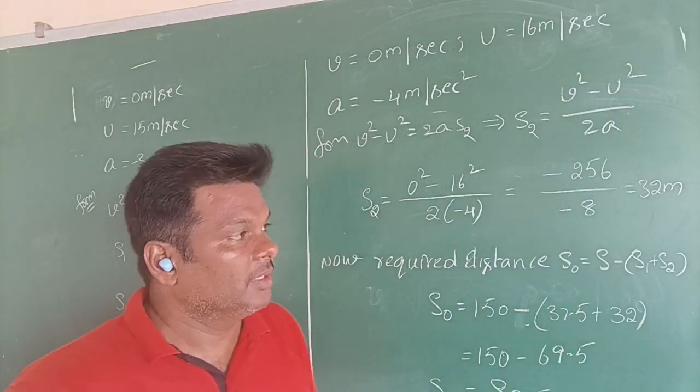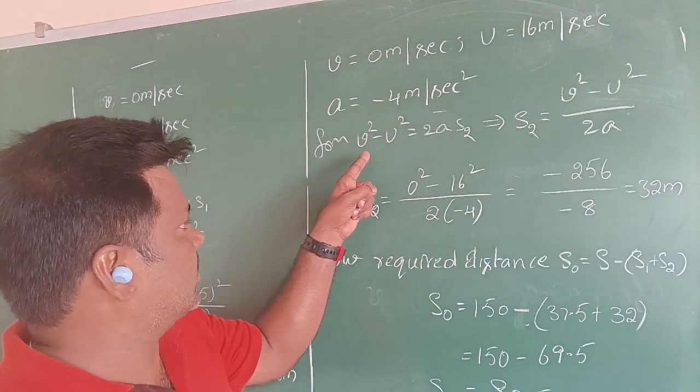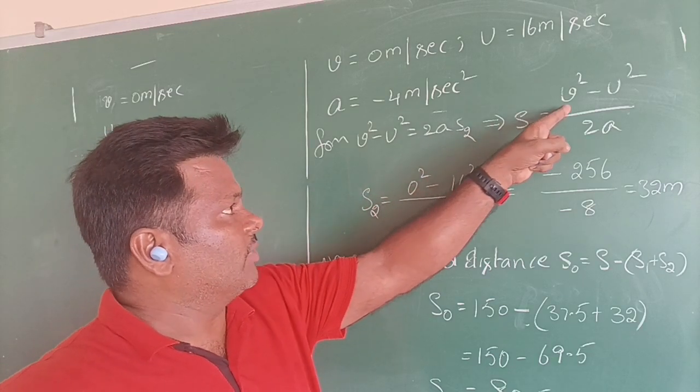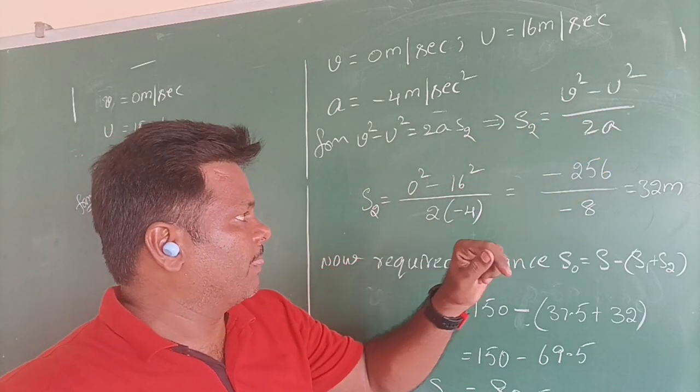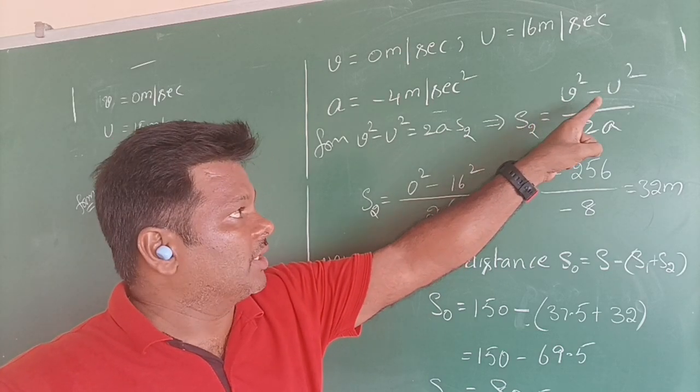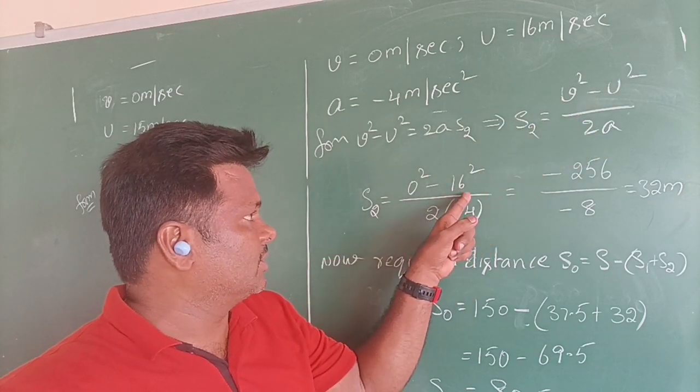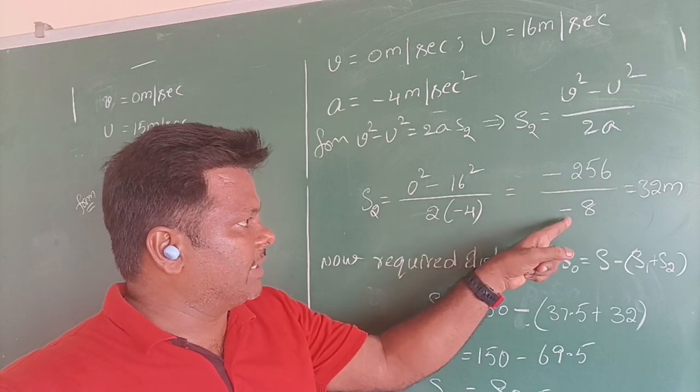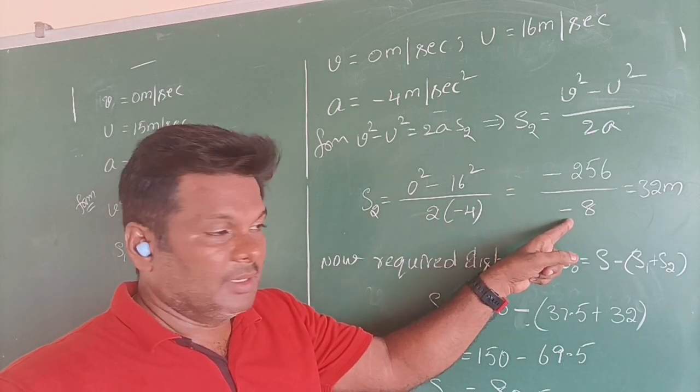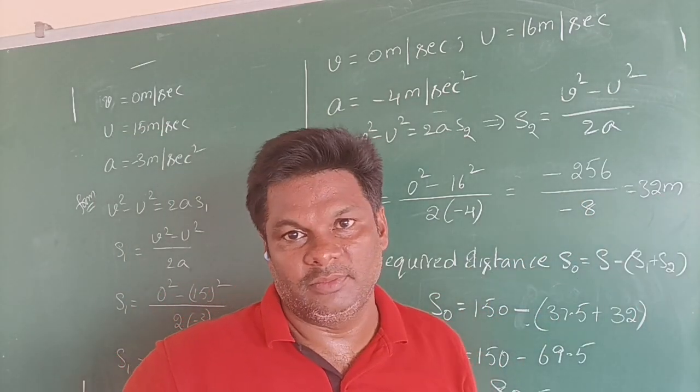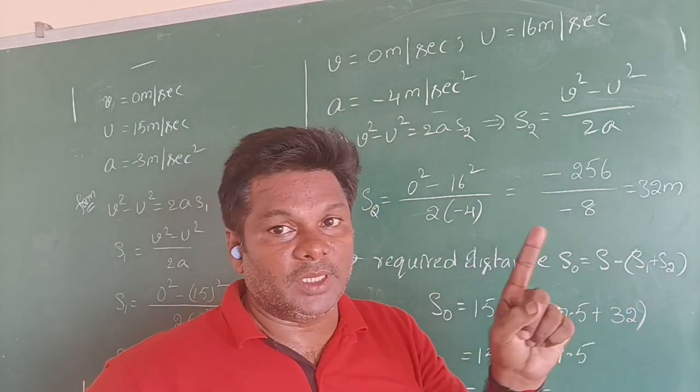Go for the next one. By using the same formula, V square minus U square is equal to 2AS2. S2 is equal to V square minus U square by 2A. Where V is 0, U is equal to 16, 16 square, 2 into minus 4, minus 8. Minus minus will get cancelled. 256 divided by 8 will become 32. 32 meters covered by the second car.